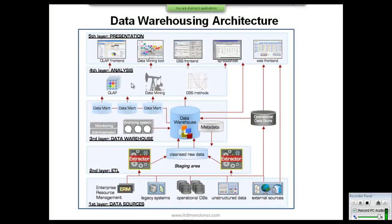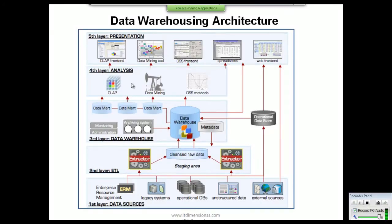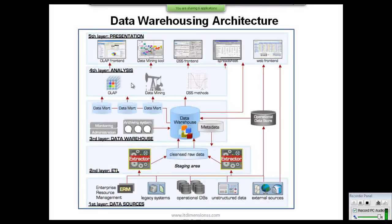The fifth layer shows the different kinds of reports generated by using a business intelligence reporting system with the help of a data warehouse. I hope you got an idea about the basic architecture of a data warehouse.